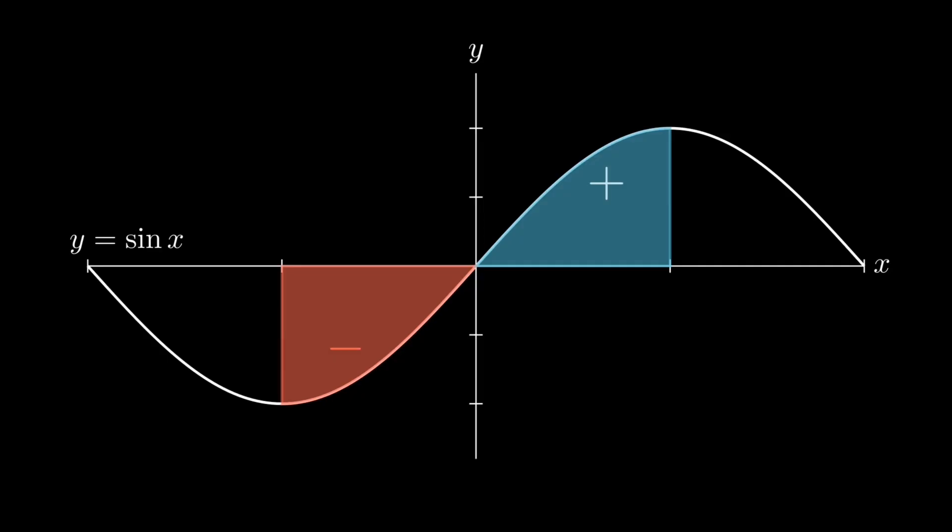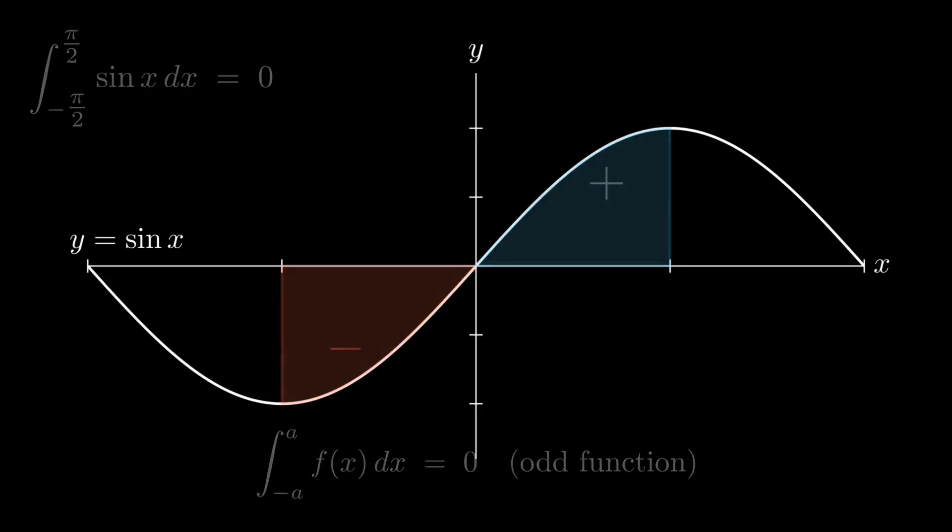So, on minus pi by 2 to pi by 2, the left half lies below, the right half above, and these two halves are equal in magnitude and thus cancel perfectly. That's the hallmark of an odd function: f of minus x equals minus f of x, and on symmetric limits, the total is 0.